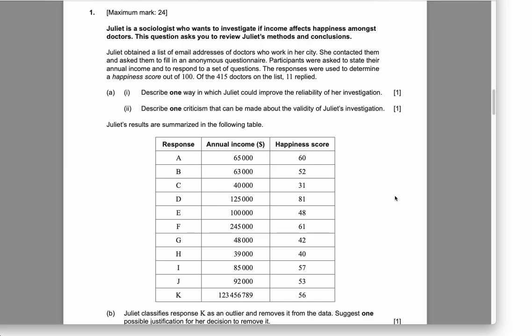Those of you who do standard level, don't worry. There's lots of this question, if not all of it, that you'll be able to understand. When I go through this example, what I want you to get out of it is not to actually do income versus happiness, but to see that you can choose your own data or whatever interests you and follow possibly the structure of this question. Let's assume we're doing this data, which is annual income and happiness score. Specifically, it's this girl Juliet, who's a sociologist who wants to investigate if income affects happiness amongst doctors. So what she does is sampling, which is why the first thing on my list here is sampling.